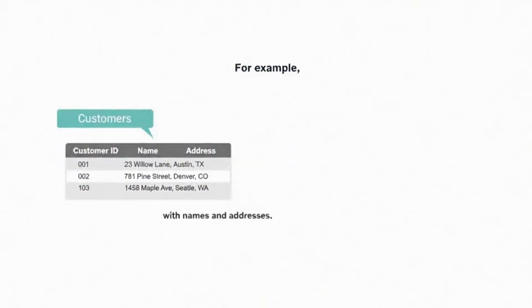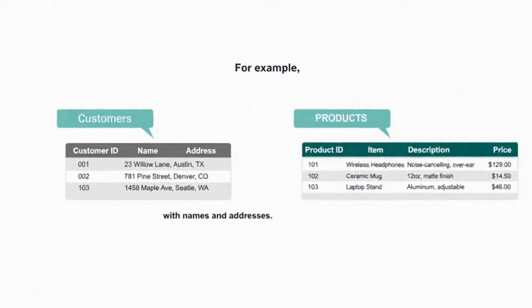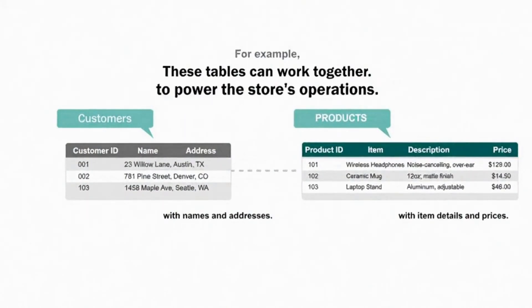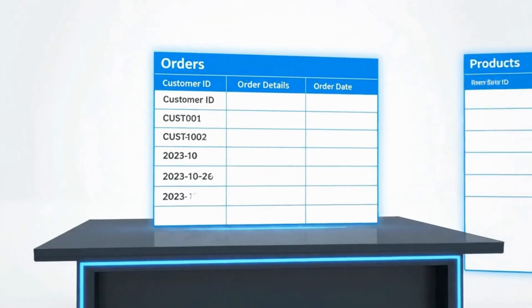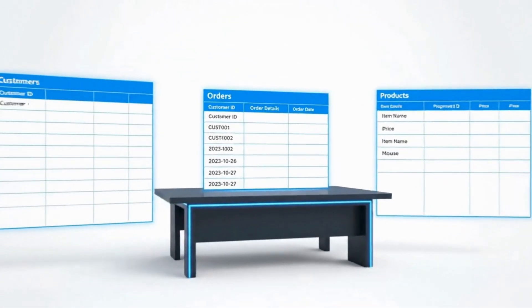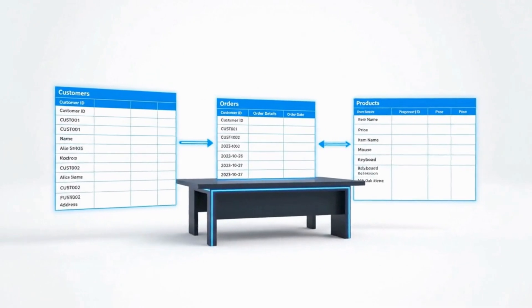For example, imagine an online store. You'd have a customer table with names and addresses, a product table with item details and prices, and an order table that connects customers to the products they bought. This connection between tables is what makes them relational.